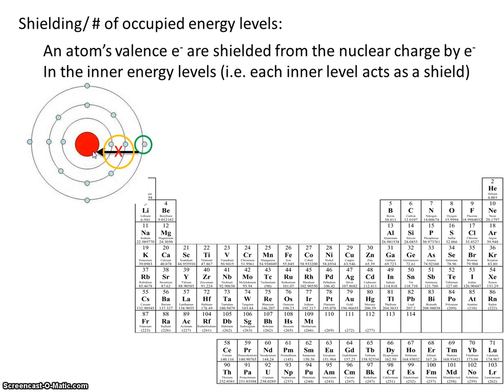So let's take a look at what happens to shielding as we go left to right across the period. Remember that the period number is the same for all of these within the same period. So for example, lithium, beryllium, boron, carbon, nitrogen, oxygen, fluorine, neon, they're all in the second period. The valence electrons are all in the second period, so they have the same number of shields. It stays the same.